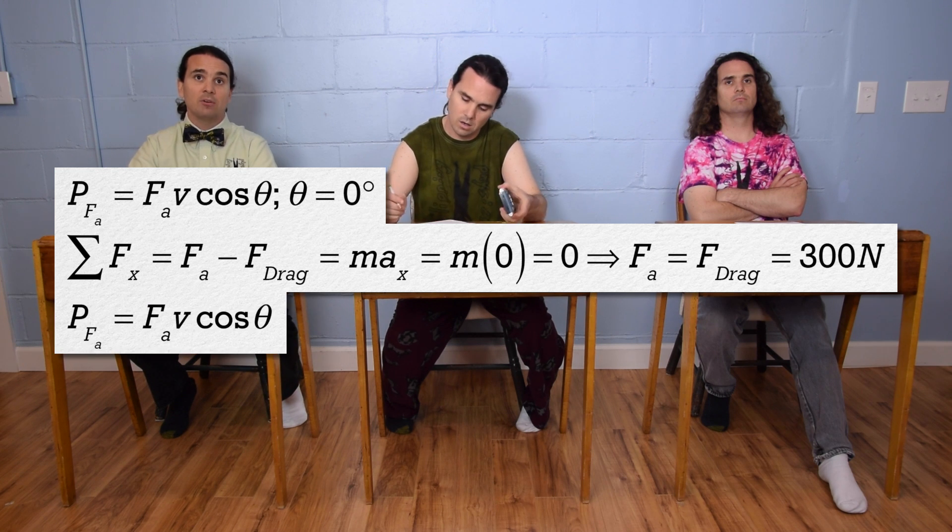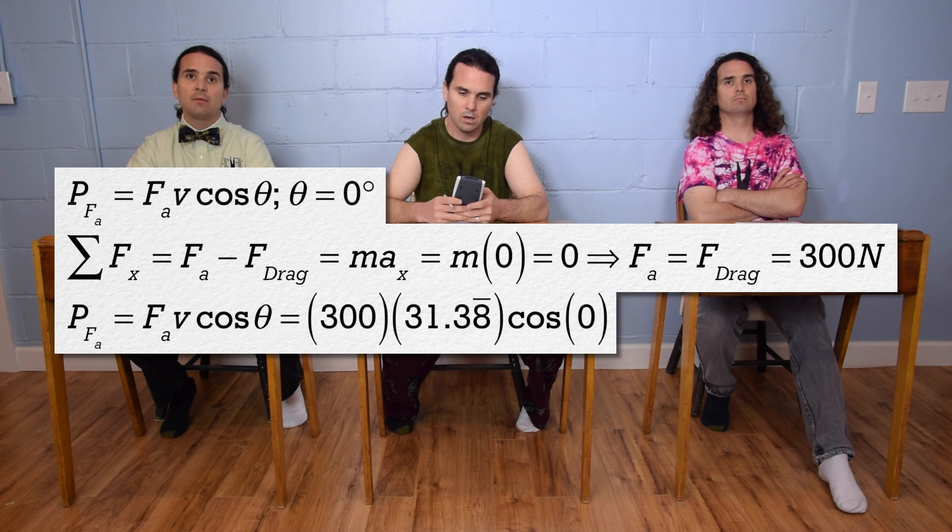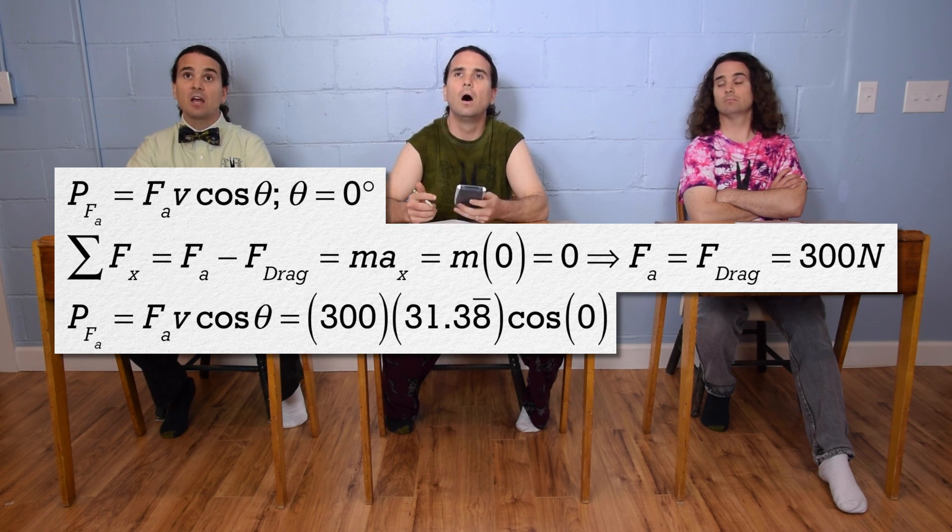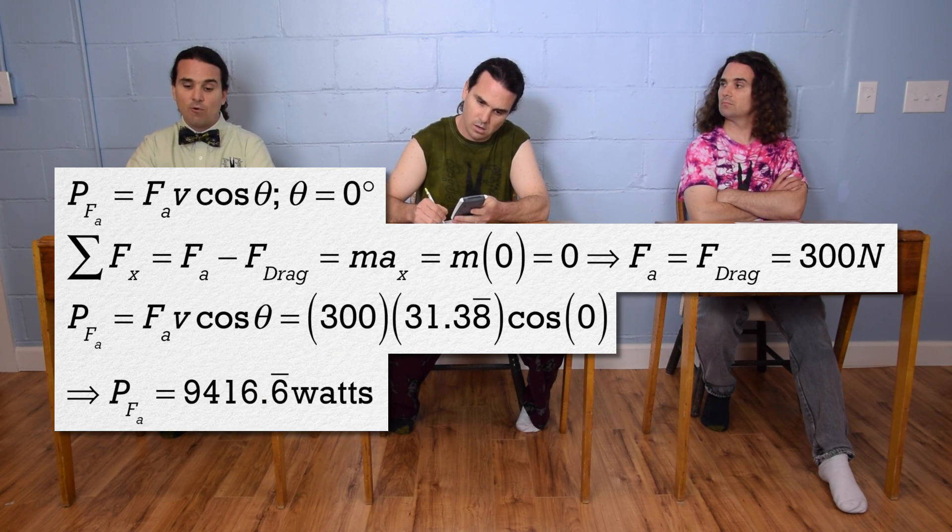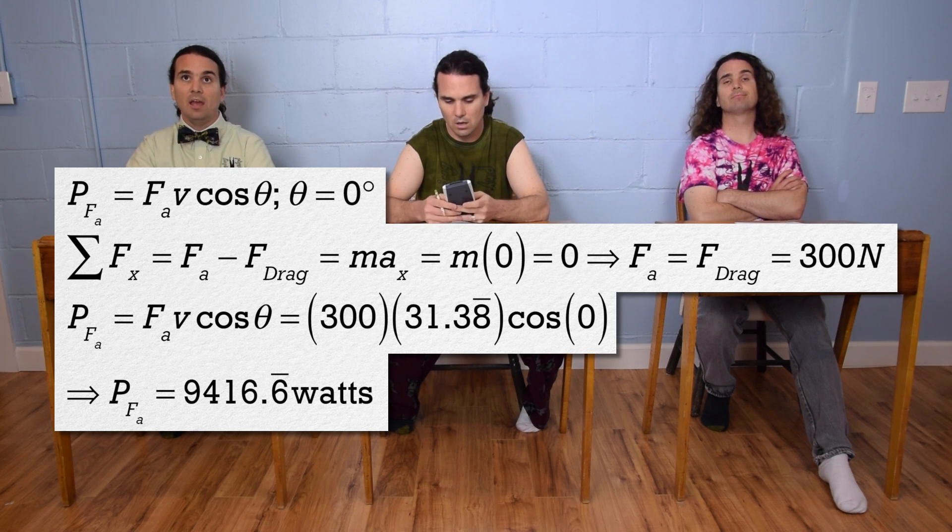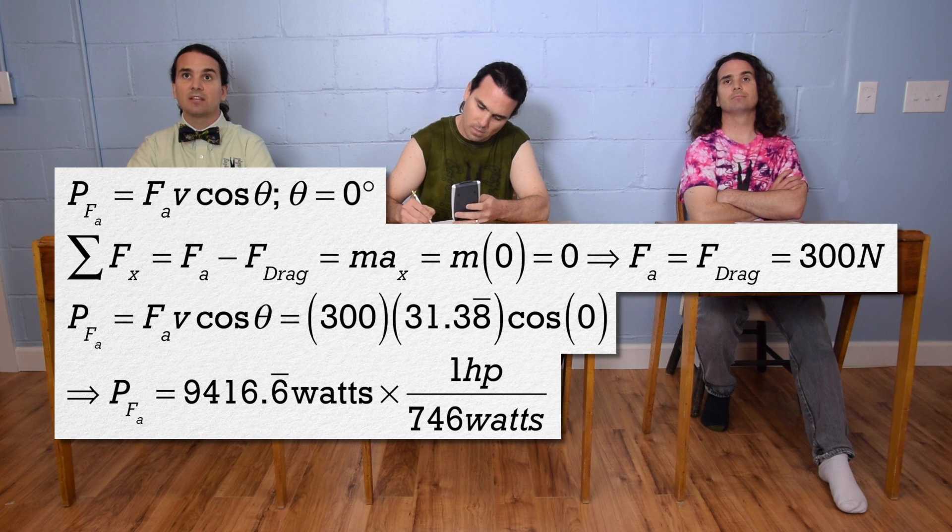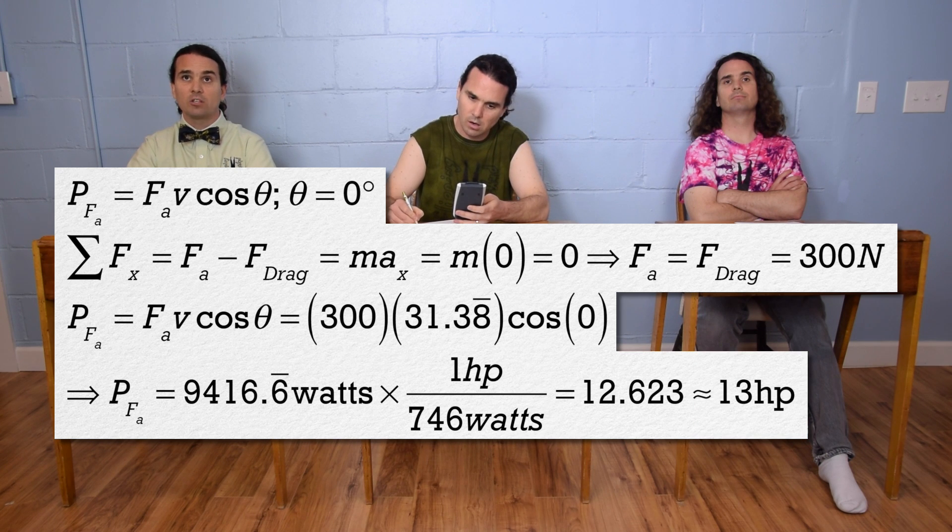So the power delivered by the force applied is 300 times 31.38 repeating times the cosine of zero, which is 9,416.6 repeating watts, and we multiply it by one horsepower over 746 watts, to get 12.623 or 13 horsepower with two significant figures.